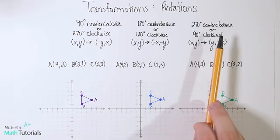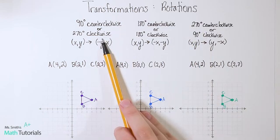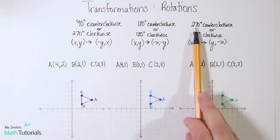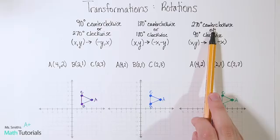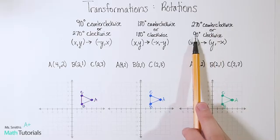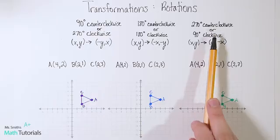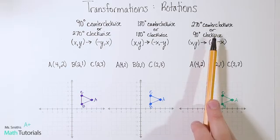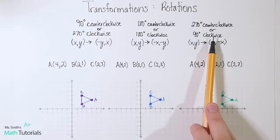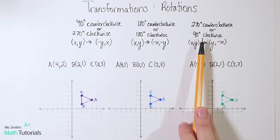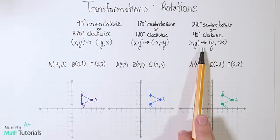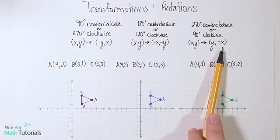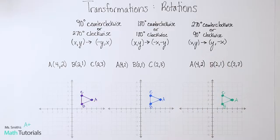Our last type of rotation is 270 degrees counterclockwise, or 90 degrees clockwise — again, those two say the exact same thing. You end up in the same place regardless of which one you're doing. The rule is: (x, y) becomes (y, -x). We flip the x and y places and the x becomes negative.